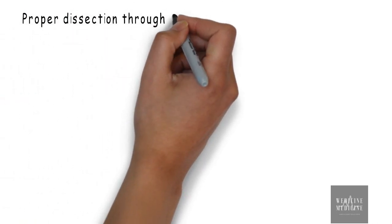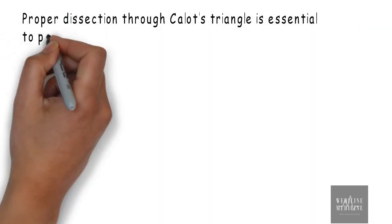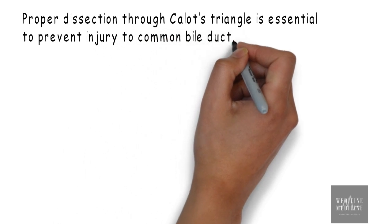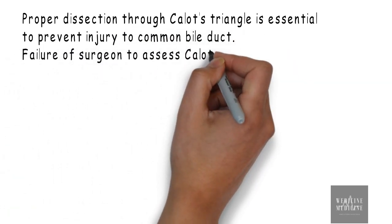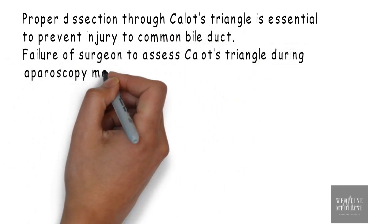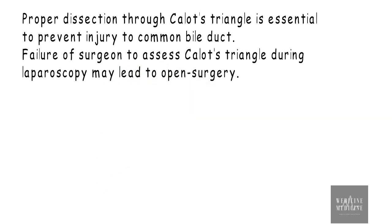And the most important part, proper dissection through Calot's triangle is essential to prevent injury to common bile duct. Failure of surgeon to assess Calot's triangle during laparoscopy may convert the surgery to open surgery.